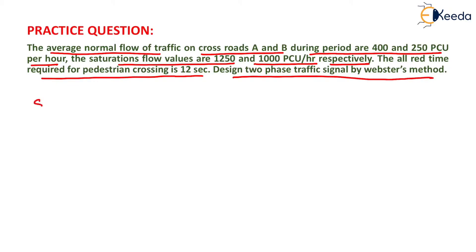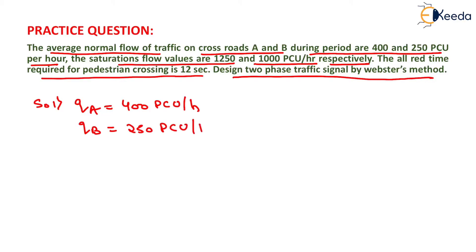From the question, QA is given as 400 passenger car units per hour, QB is given as 250 passenger car units per hour, SA is equal to 1250 passenger car units per hour, and SB is equal to 1000 passenger car units per hour.